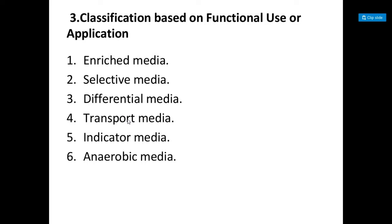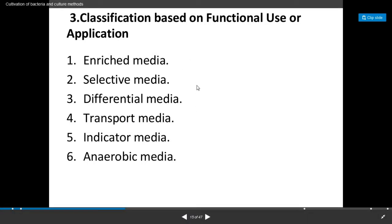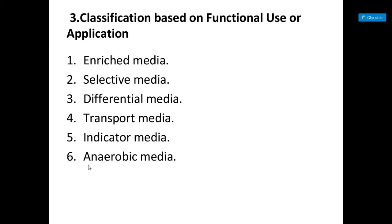Today in this lecture we will see the classification of nutritional media on the basis of functional use or application. According to this criteria, culture media or nutrient media are classified into six different types: number one, enriched media; number two, selective media; number three, differential media; number four, transport media; number five, indicator media; and number six, anaerobic media. We are going to see all these different types of media one by one.